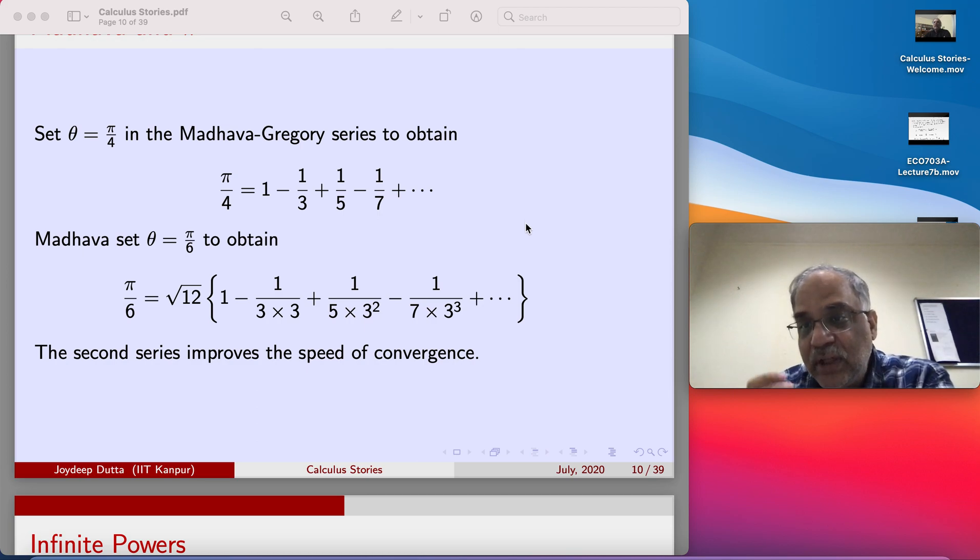The number of terms that you have to add to go to a good approximation of pi is much more here than compared to here, when you took theta equal to pi by 6. So that improves the speed of convergence, and that's what they were trying to do. They were trying to calculate as many decimal numbers of pi very fast, and that was one of their aims because pi was coming in most many calculations, especially the astronomical ones, which they were trying to do. As I told you, mathematics was part of astronomy.